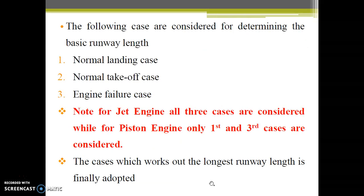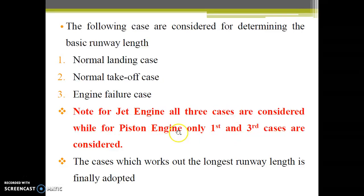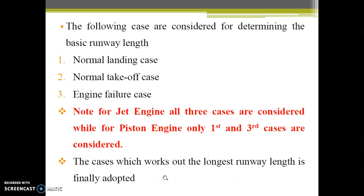Before deciding the basic runway length, there are a few cases to go through: the normal landing case, the normal takeoff case, and the engine failure case. For jet engines, all three cases are considered, while for piston engines only the first — normal landing — and third — engine failure — cases are considered, because the normal takeoff case does not significantly affect runway length for piston engine aircraft. The case that gives the longest runway length is finally adopted.